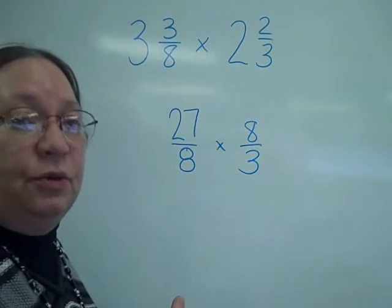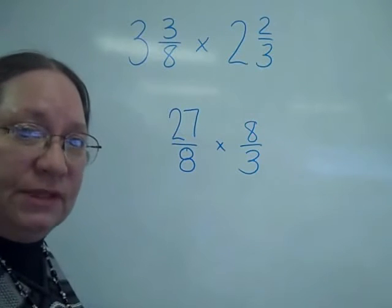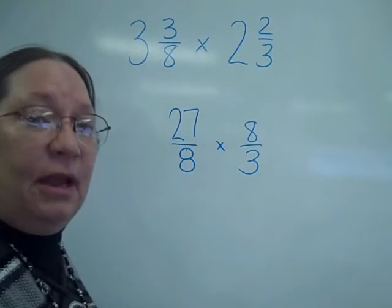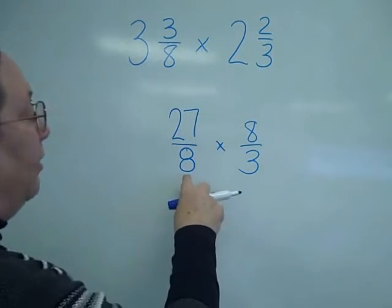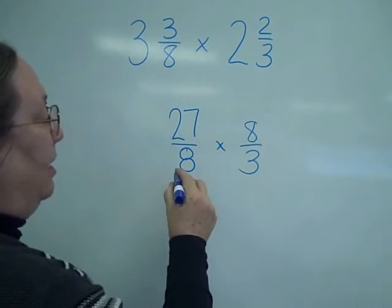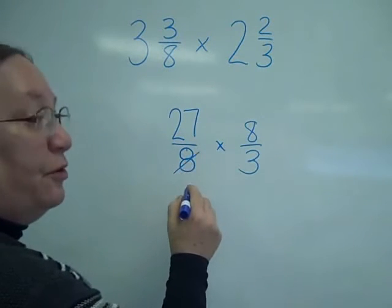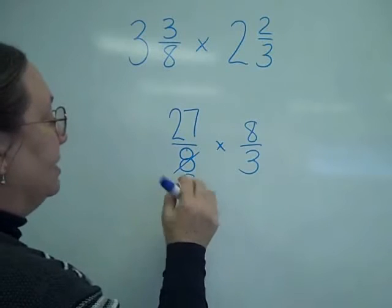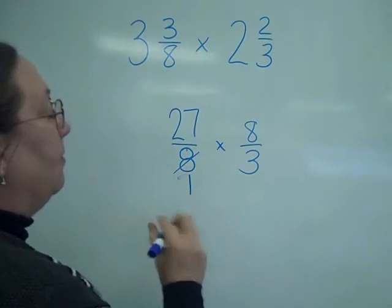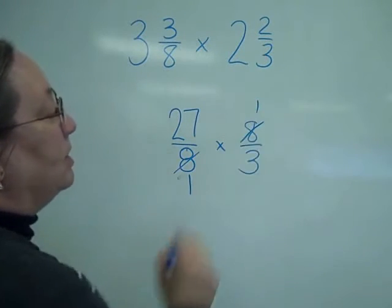Now, I want to do the simplifying or the reducing or the canceling. I really like to see the 8 and the 8. I'm going to reduce or divide by 8. 8 goes into 8 one time, 8 goes into 8 one time.